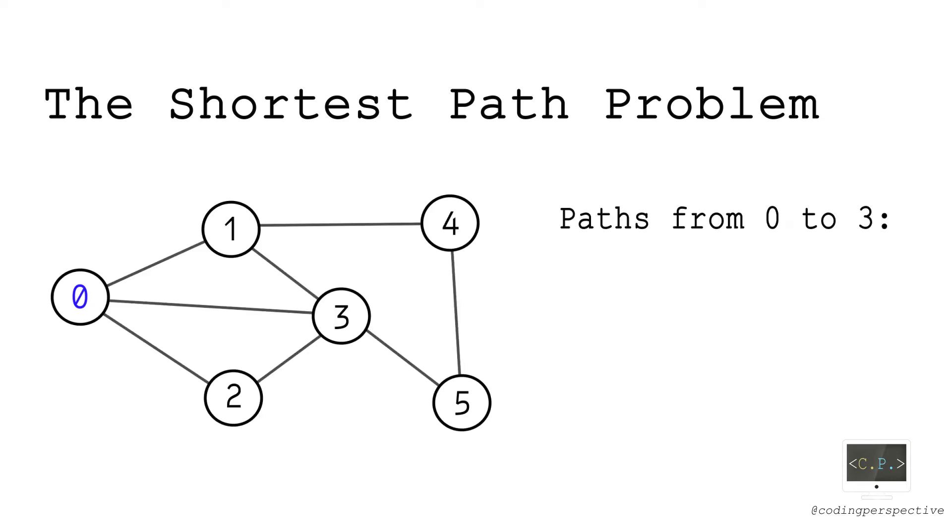For example, all the possible paths from node zero to node three are zero three, zero one three, zero two three, even zero one four five and three. To find the length of each path, we sum the weights of the edges on the corresponding paths. For instance, the length of path zero three is two while the length of path zero one three is one point five. And the lengths of the others are as follows.